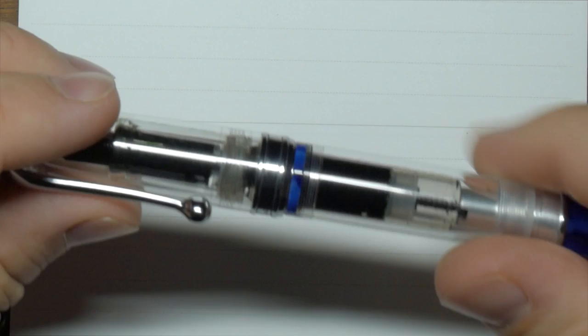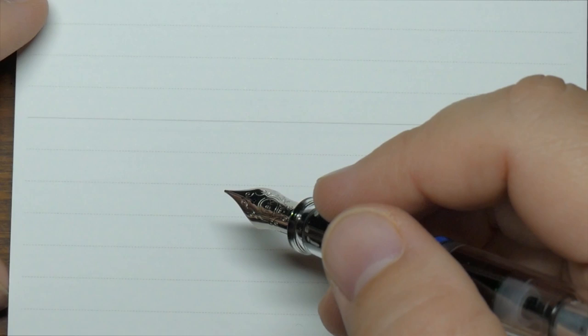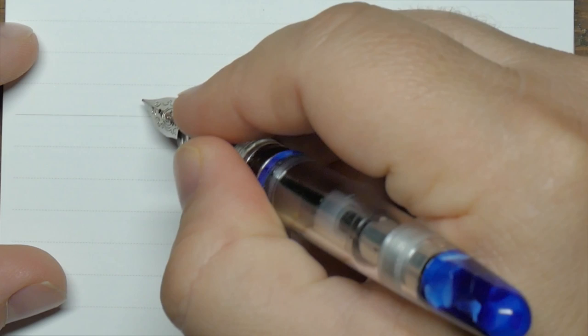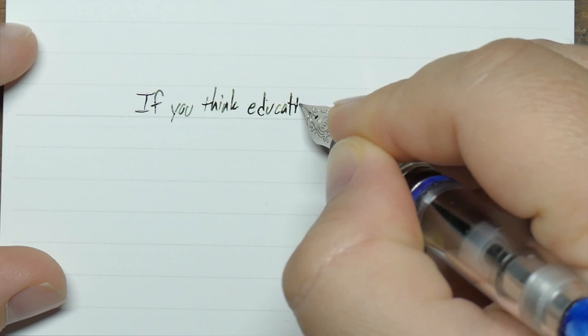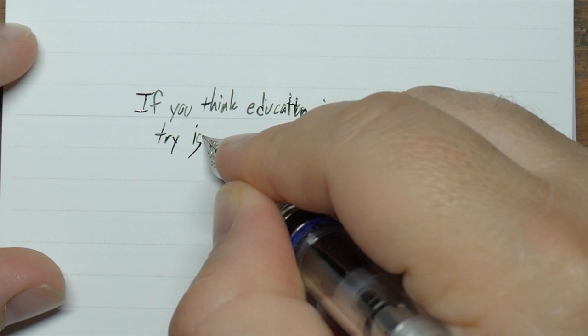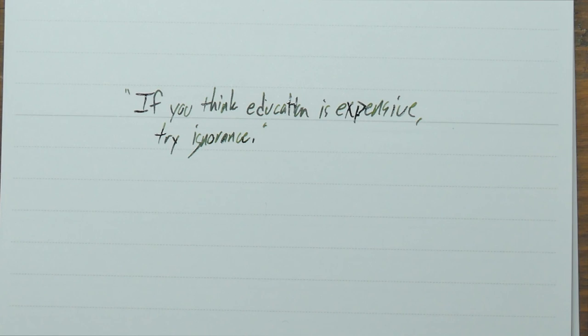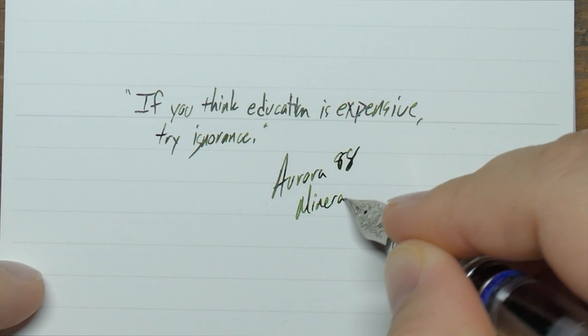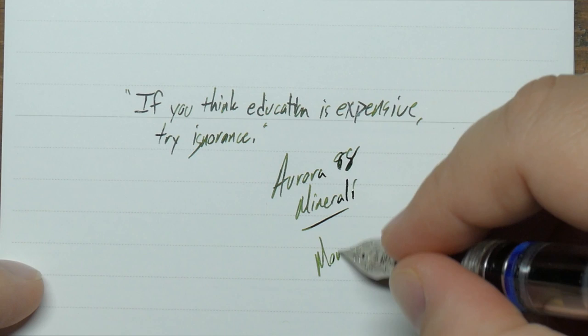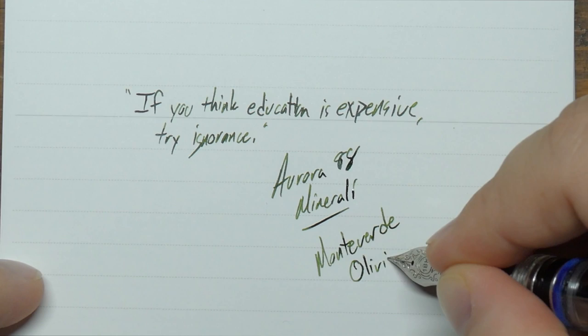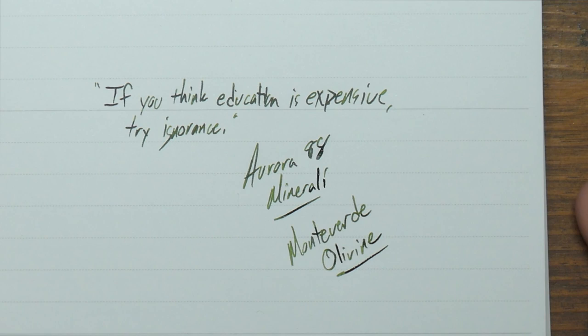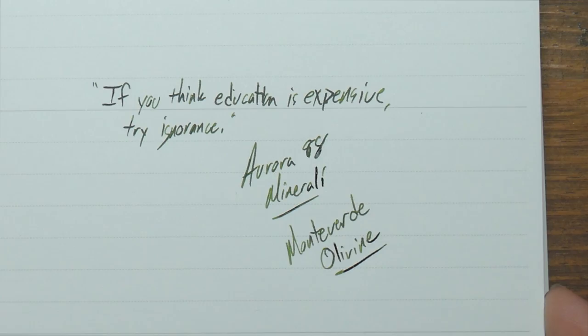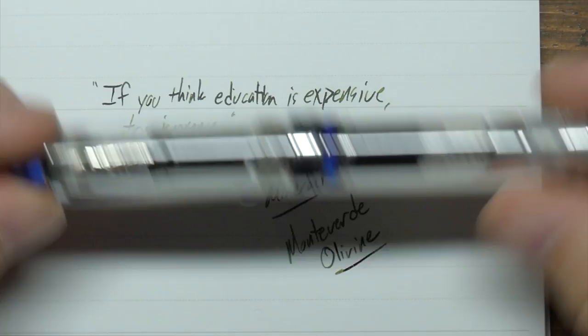Okay, let's go ahead and do a writing sample here. I just Googled quick quips to put on this paper, and this is the one that struck my fancy. If you think education is expensive, try ignorance. This is written with the Aurora 88 Minerali, and this ink is Monteverde Olivine.